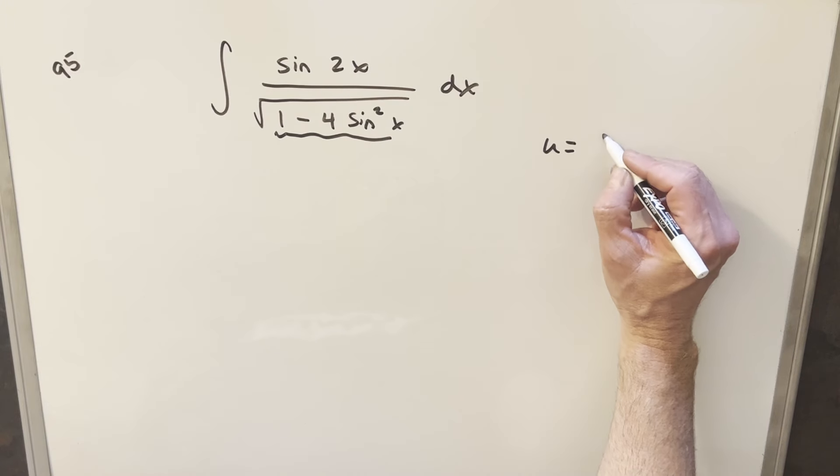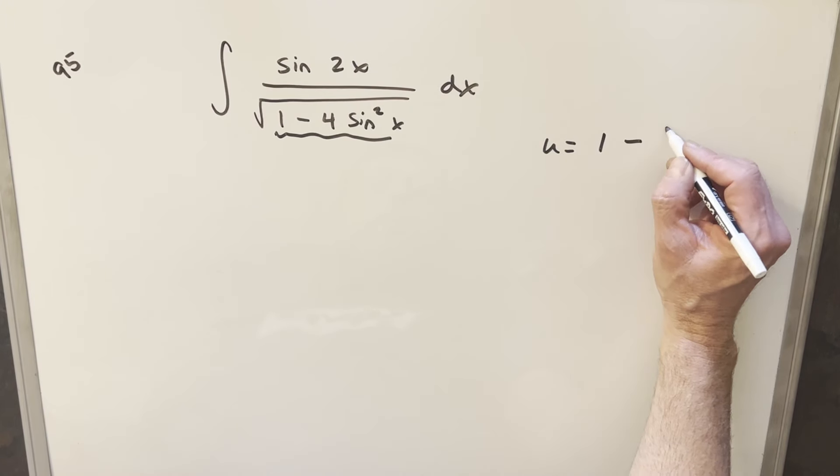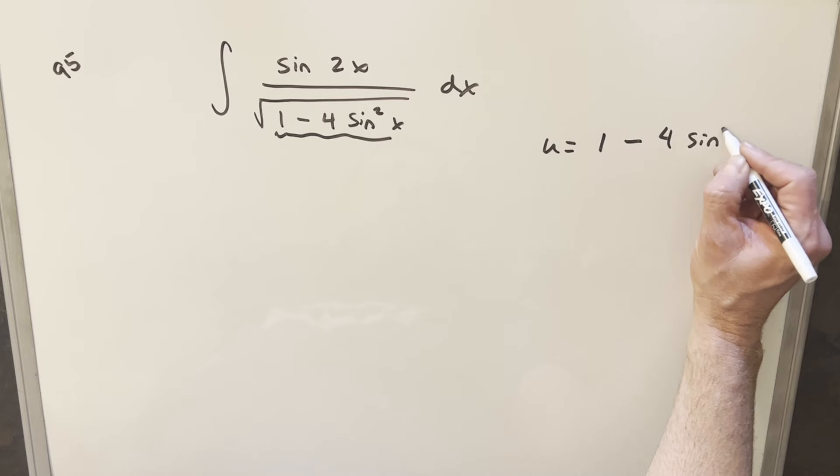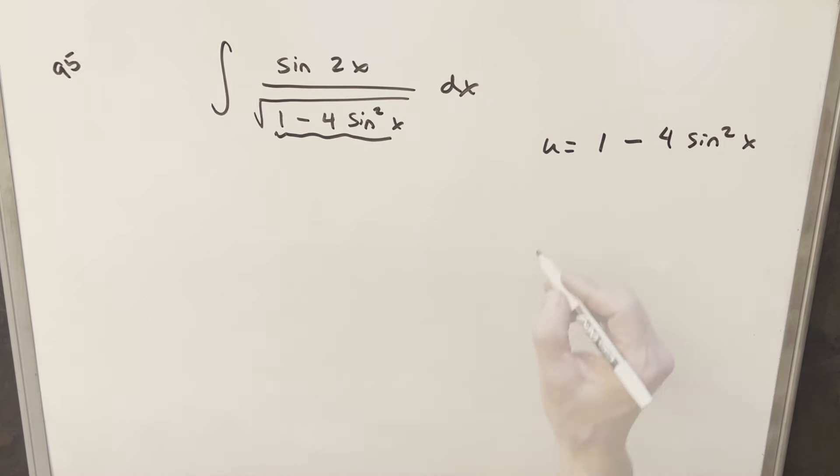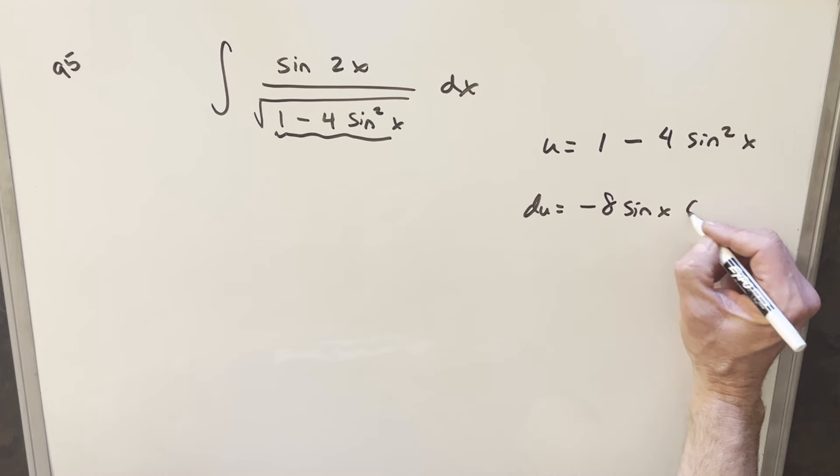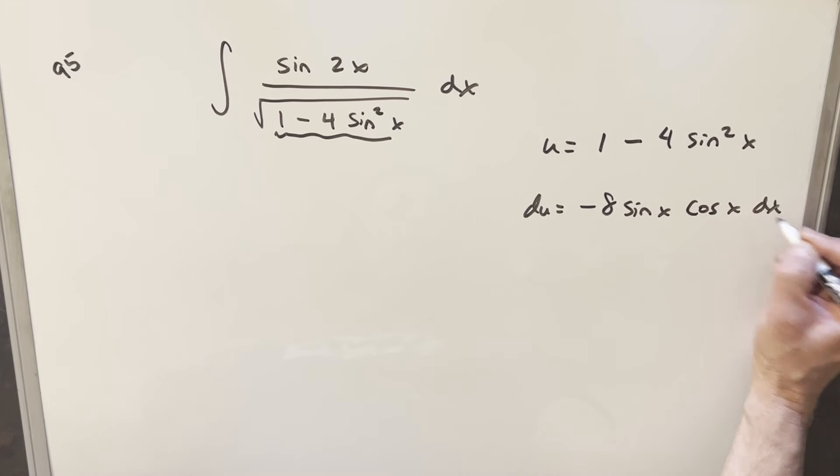So if I make my u-substitution for u equal to 1 minus 4 sine squared x, then take the derivative. du is going to be minus 8 sine x using power rule. Then chain rule, derivative of sine x is cosine x dx.